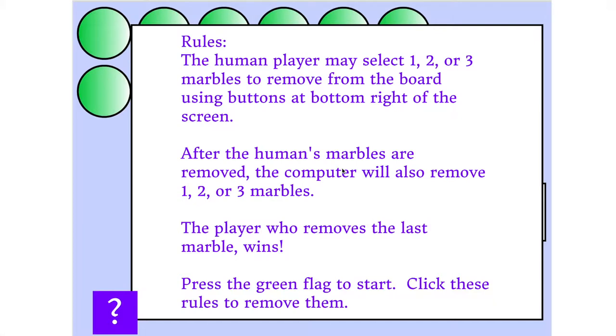They can remove one, two, or three marbles in each turn, and the goal is to be the player who gets that last marble. Whoever gets that last marble wins. They don't have to get just one last marble, so if you're in that last group that you can get them, you're going to win.